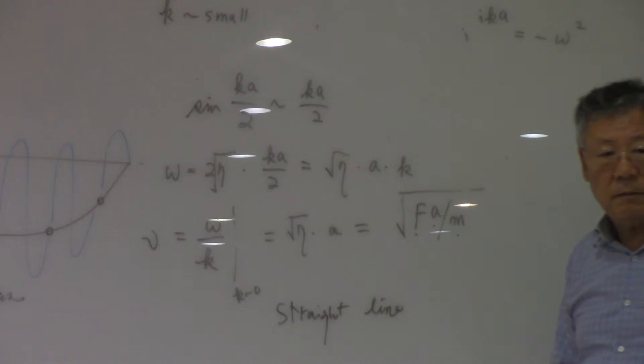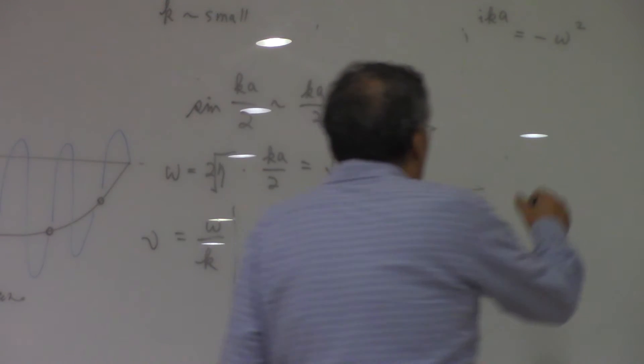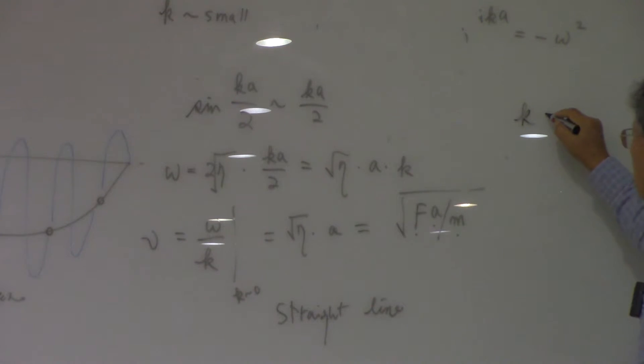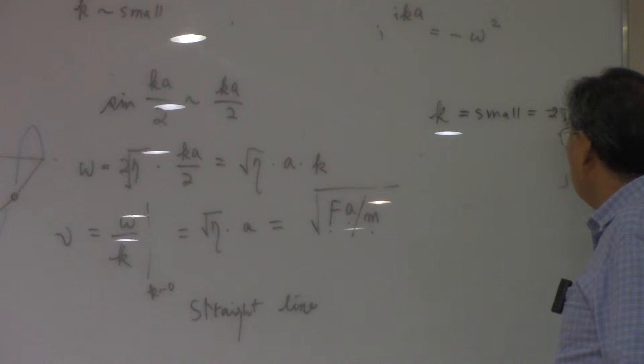Non-dispersive system when the K value is very small. What does that mean, K is small? K is 2 pi over lambda, so when K is small, the lambda is very large.